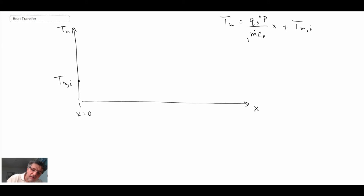Well, it's just a constant slope and this is the slope. And so consequently, what we can do is we can say that the temperature, the bulk temperature, is going to look something like that. It's a constant slope curve, a linear curve.